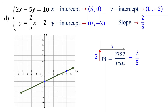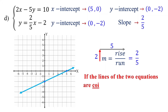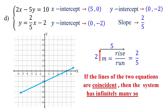When you connect these points with a straight line, it perfectly aligns with the first line. So, the line of the first equation and the line of the second equation are the same — they coincide perfectly. If the lines of the two equations are coincident, then the system has infinitely many solutions.